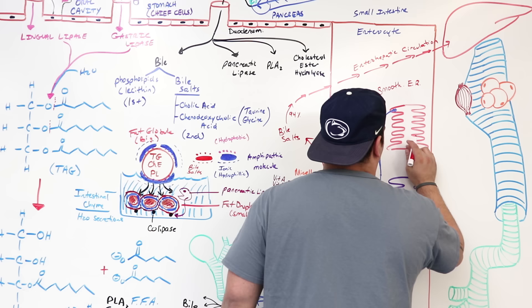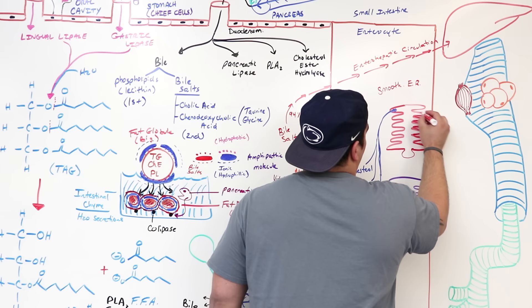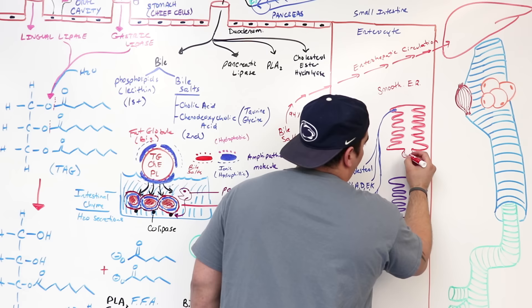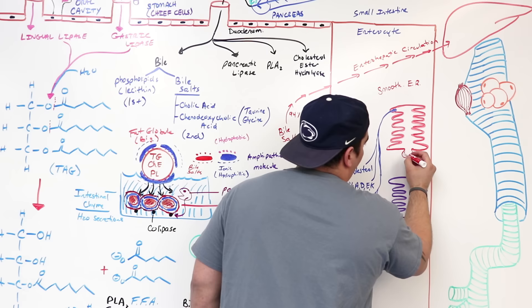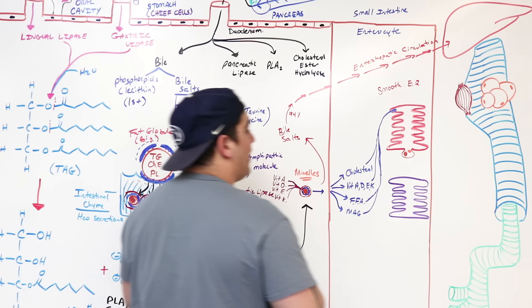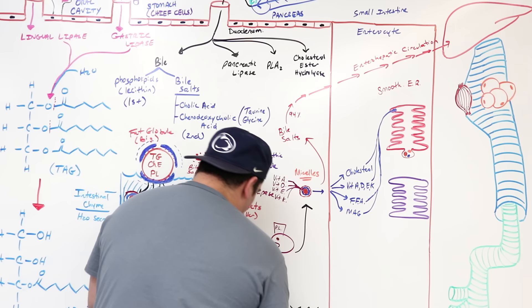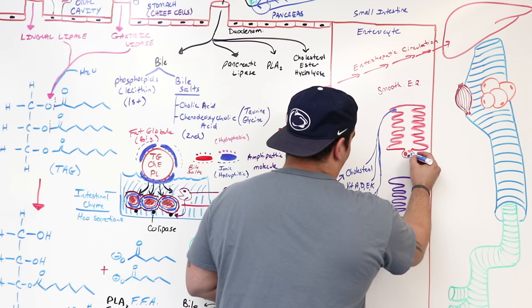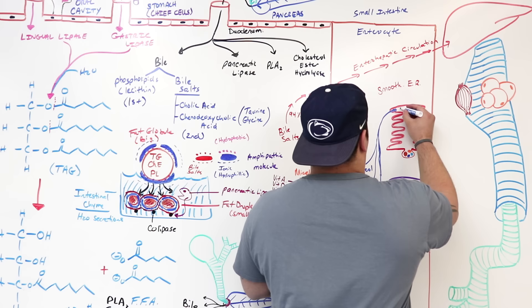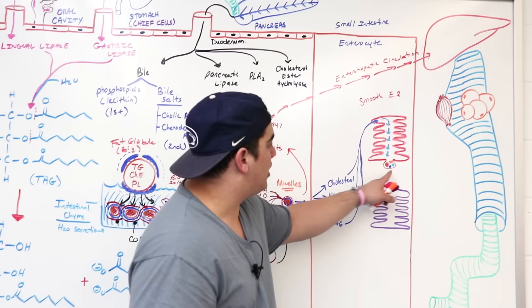Once they go to the smooth endoplasmic reticulum, special enzymes convert the free fatty acids and monoacylglycerol back into triglycerides — resynthesizing them. It also deals with cholesterol: some cholesterol is kept in free cholesterol form, and some is reconverted back into cholesterol esters. Some of the fat-soluble vitamins are also packaged in there.